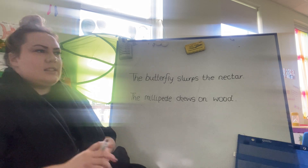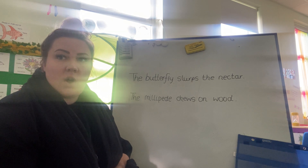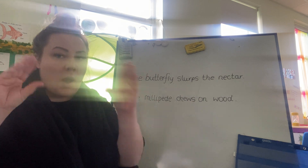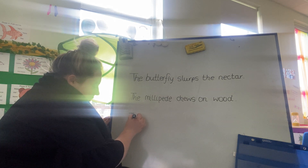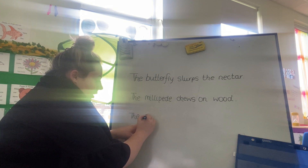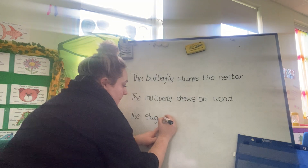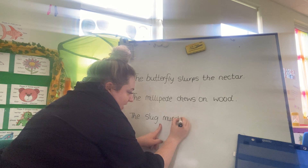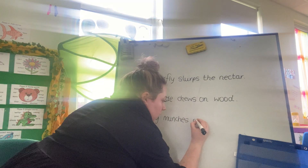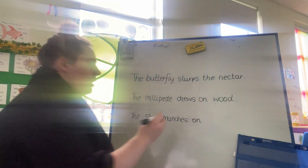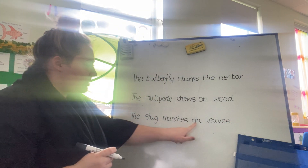And then the last animal — can anyone remember what the last one is? That's right, it's the slug. And the slug likes to munch on leaves. So we're going to spell the word 'the' again — tricky word, capital T — the slug. S-l-u-g, slug. Munches — now this is a bit of a tricky word: m-u-n-ch-es. On: o-n. Leaves. Full stop. The slug munches on leaves.